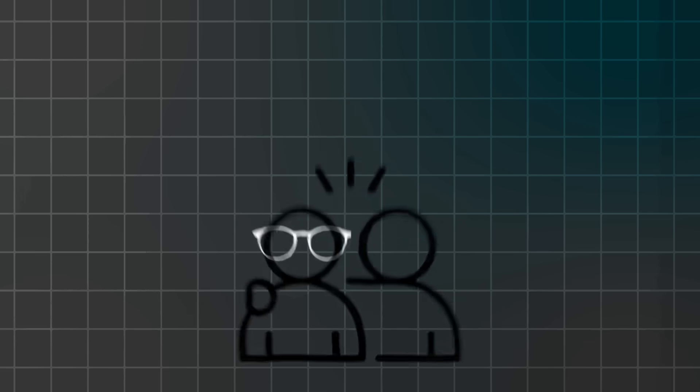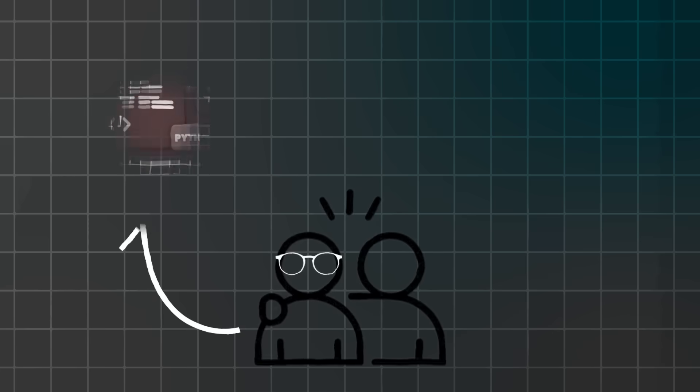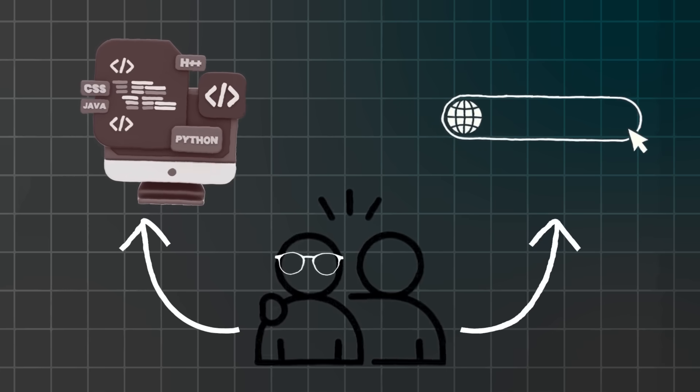Let's jump right into step one. This first step is going to feel like magic because we're setting up your personal AI coding assistant. Think of Replit like having a super smart friend who knows how to code living right in your browser. Instead of spending months learning programming languages, you just tell this friend what you want, and they build it for you instantly. It's like having a personal app developer who works for free.